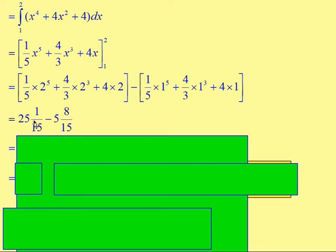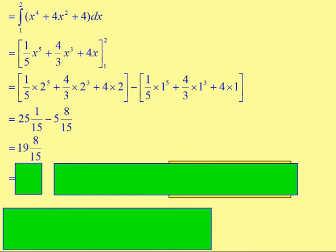Remember, keep exact values in advanced higher. Don't start writing that down as 25 point whatever that would be. Keep it as exact values. And then this one here as well, if you worked out what is in that bracket, you get 5 and 8/15ths. Subtract: well, 25 take away 5 will give you 20. And then 1/15th, if you take away 8/15ths, you will end up with an answer of 19 and 8/15ths. Working that out, if you multiply 19 times 15, then add on the 8, you will get 293. So you get 293/15ths.